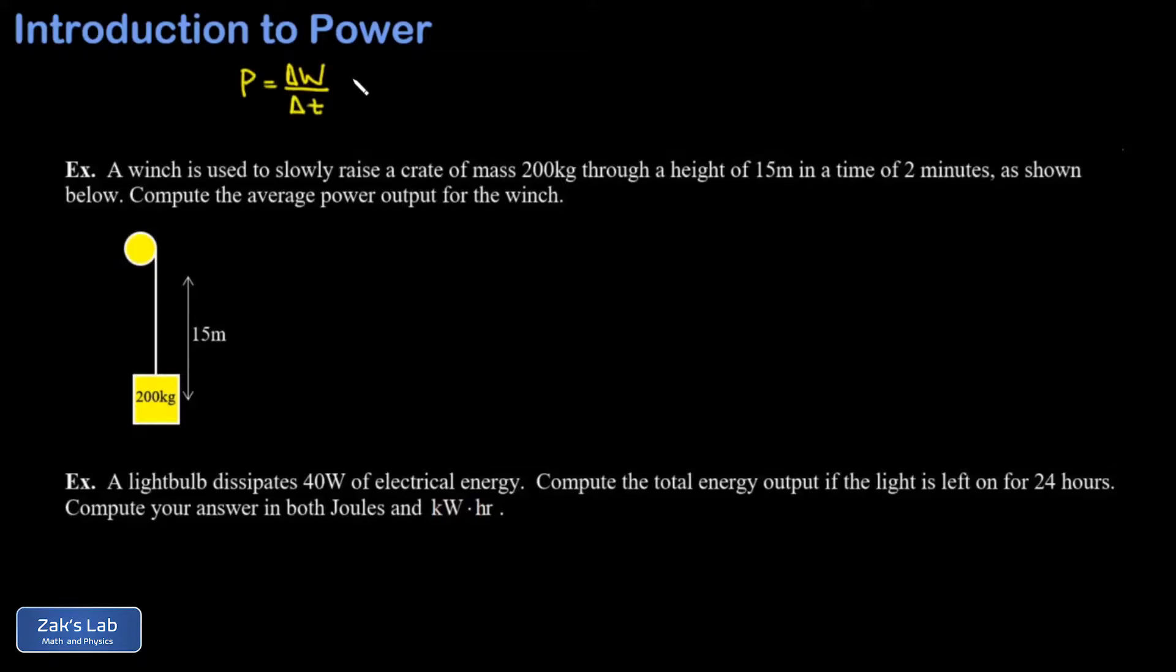We define power as delta W over delta t, where delta W is the increment of work that's been done and delta t is the time it takes for that work to be done.